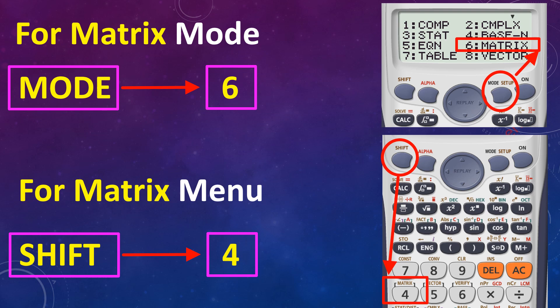For Matrix Mod, press the Mod button, after that click 6. For Matrix Menu, click the Shift button, after that click 4.